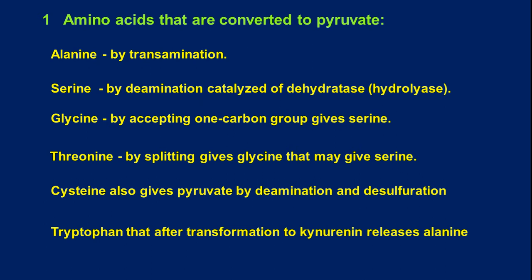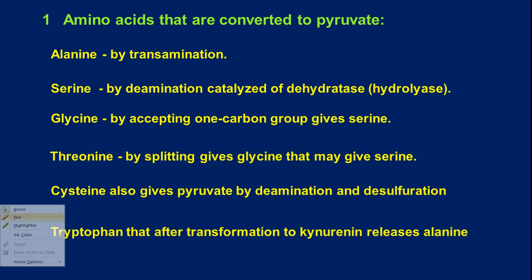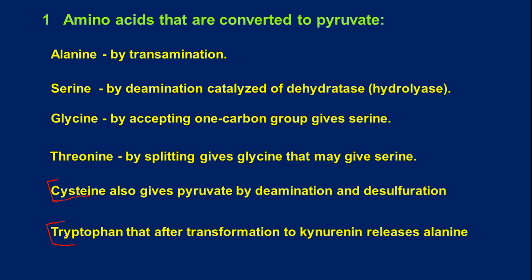Regarding cysteine, we will discuss it in the sulfur-containing amino acids section, and tryptophan in aromatic amino acids. That is why we will focus on these four amino acids in this lecture session. First, let us see alanine.